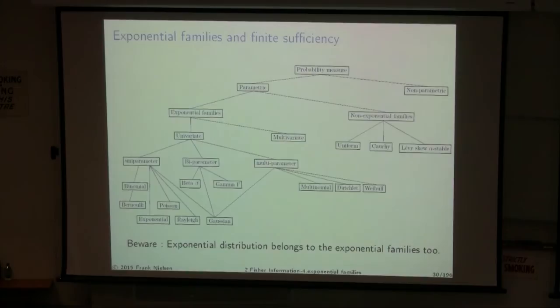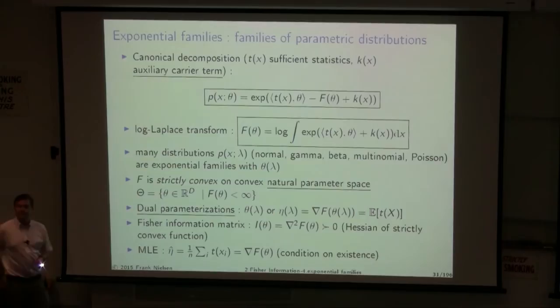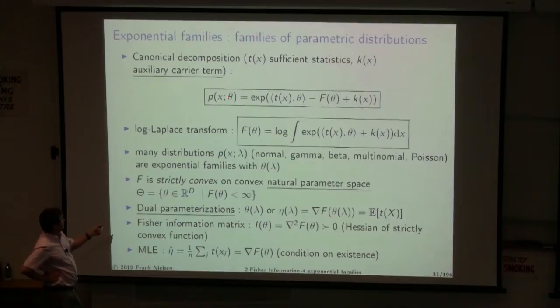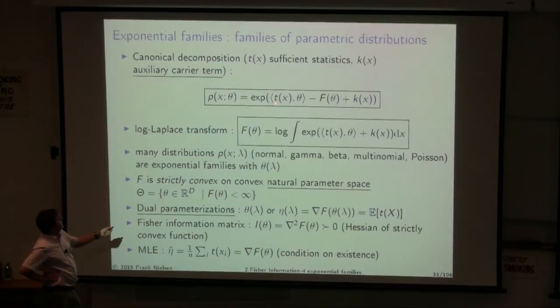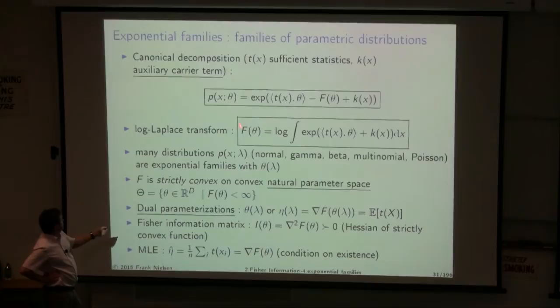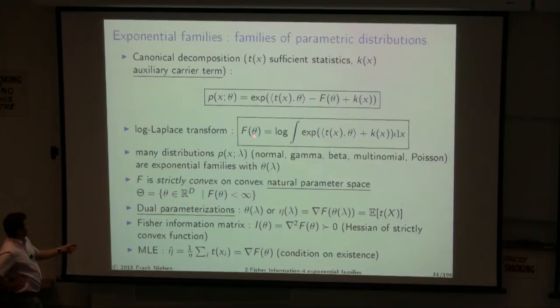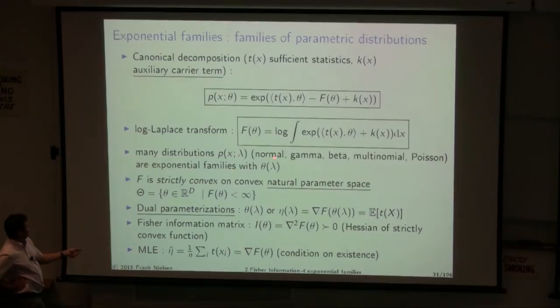An exponential family has the canonical density: p(x; θ) = exp(⟨θ, t(x)⟩ − F(θ) + k(x)), where t(x) are the sufficient statistics, F(θ) is the log-normalizer (log-Laplace transform ensuring the density integrates to one), and k(x) is an auxiliary term. This canonical decomposition unifies many well-known distributions. Usually they are not given in the θ parametrization but in another parametrization λ (e.g., Gaussian with μ, σ), which can be converted to the natural exponential family form.